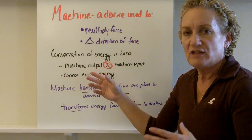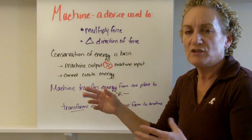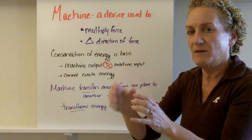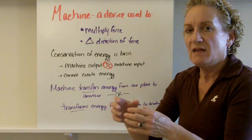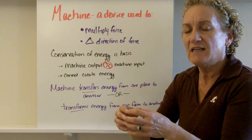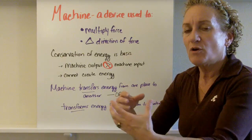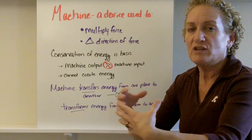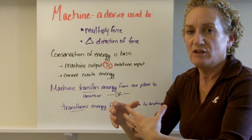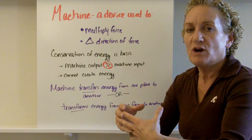Machines are all based on conservation of energy, and one of the really important things to know about a machine, and we're going to talk about efficiency in a minute and we're going to measure this, but that a machine cannot create energy. You can never get more energy out of a machine than you put into a machine. So, what good are machines?